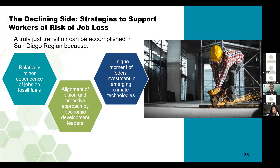El equipo de PERI proyecta que la región de San Diego no debería experimentar ningún desplazamiento laboral hasta 2030. Esto se debe a que la tasa de deserción por jubilación es cercana a la tasa de pérdida de empleo. Entre 2030 y mediados del siglo, el equipo de PERI proyecta una disminución del 75% en los empleos de combustibles fósiles. Ahora llegamos a la pregunta verdaderamente desafiante planteada a Inclusive Economy: ¿cómo apoyamos a los trabajadores en riesgo de perder su trabajo debido a la descarbonización?